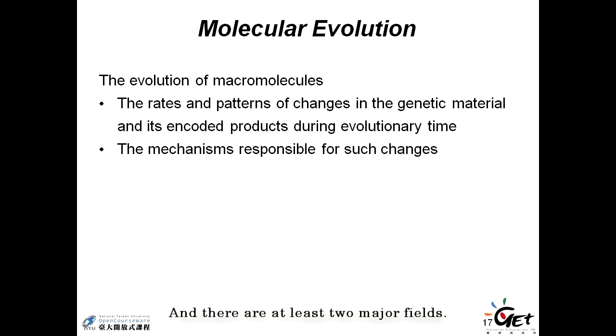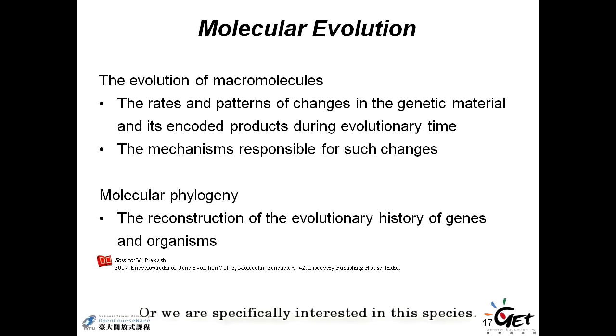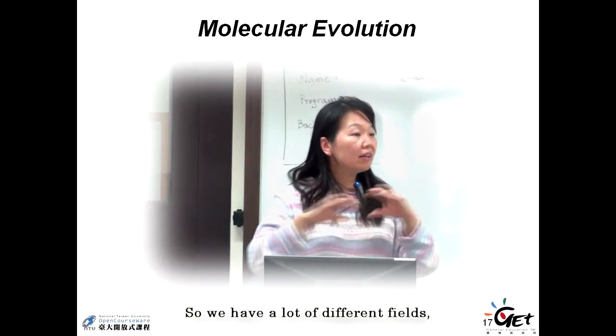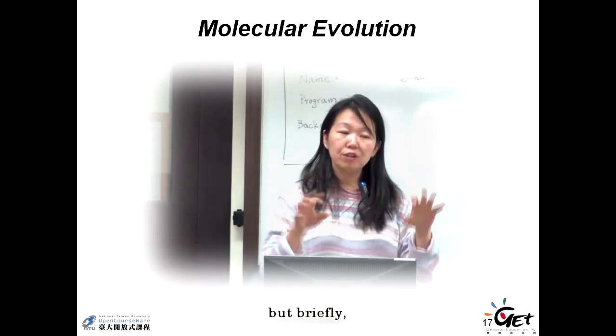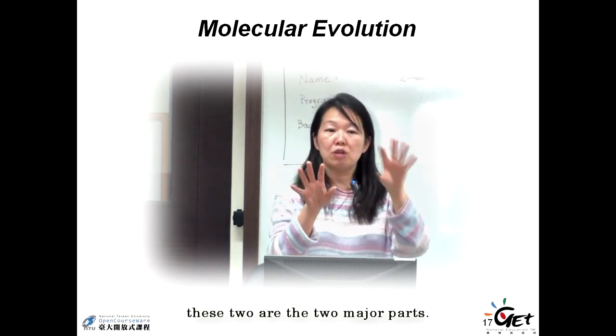There are at least two major fields, and I already mentioned that. One is we are interested in the molecule, and specifically we say the macromolecules. When we say macromolecules, we talk about DNA or proteins. Or we are specifically interested in the species. So that's the phylogenetic reconstruction. We have a lot of different fields, but briefly, these two are the two major parts.